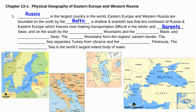To the north you also have the Barents Sea, and on the south side you have the Caucasus Mountains, the Adriatic, Black, and Caspian Seas. You have the Ural Mountains, which form the region's eastern border.